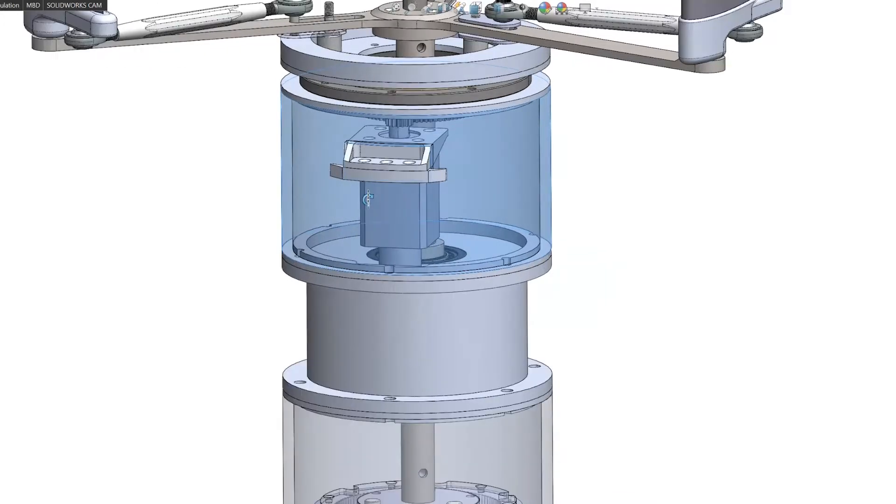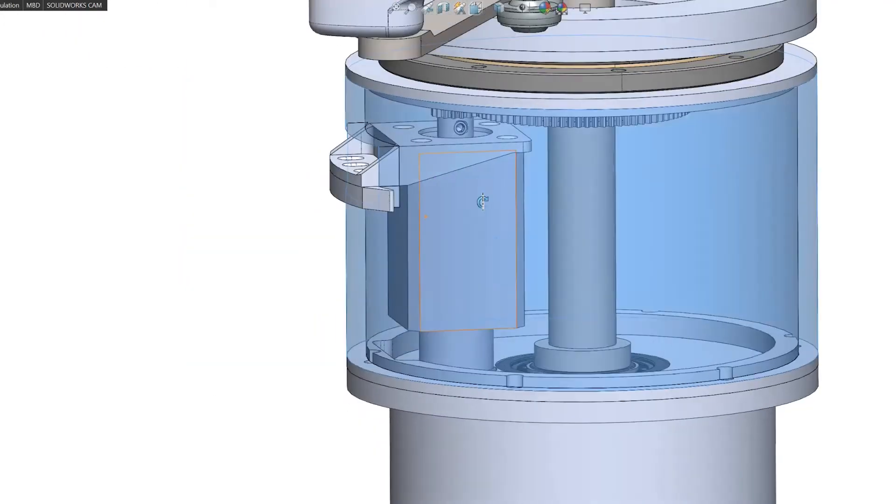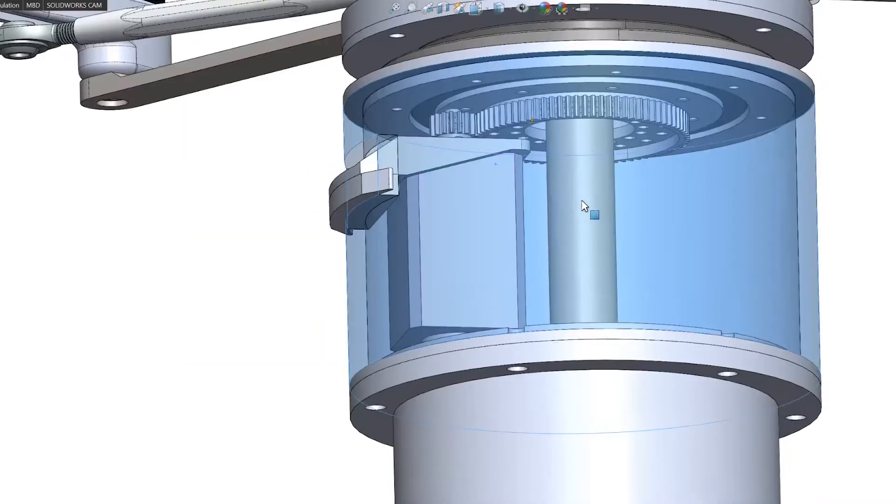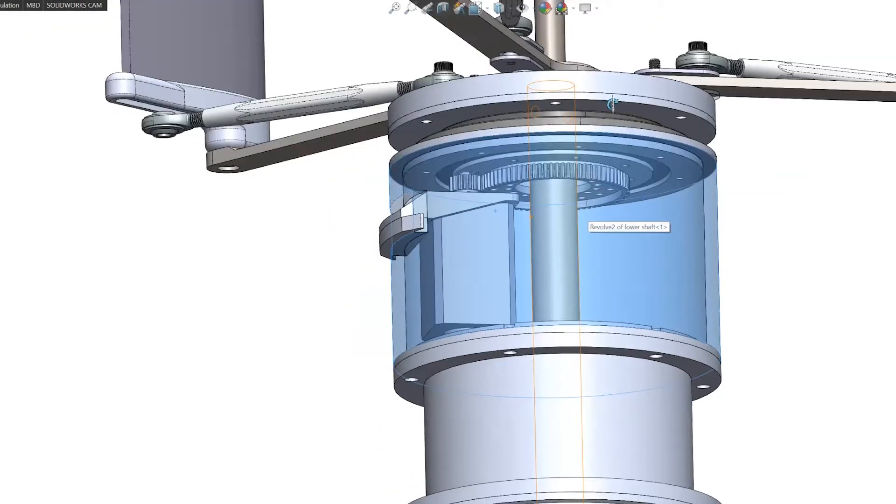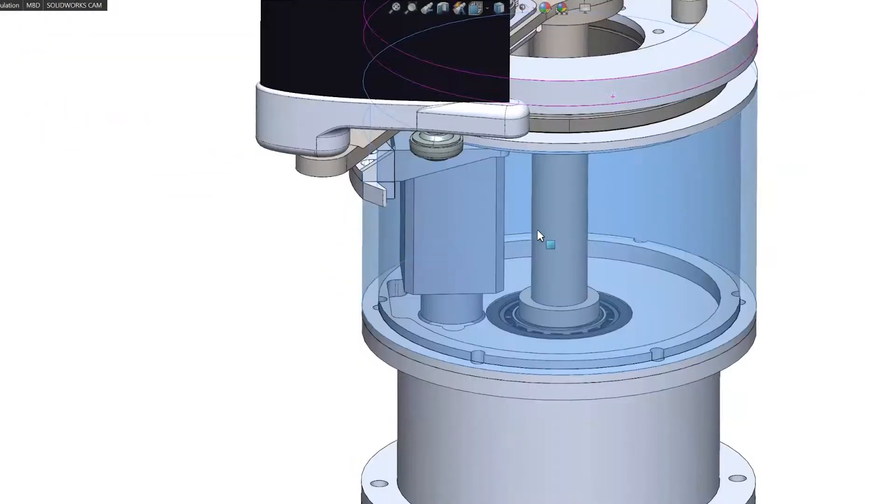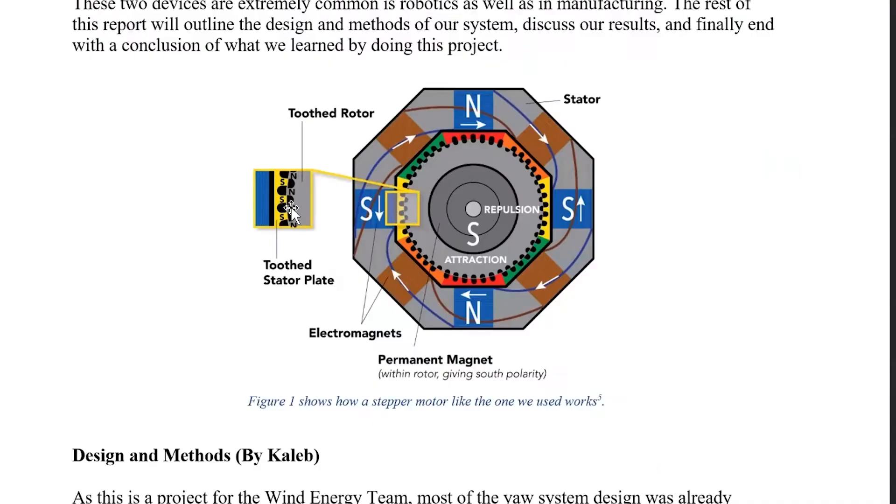This is the yaw system. This houses the stepper motor for the yaw system with the two gears to drive the cam. There's the stepper motor. This is like a cross-sectional cut of it.